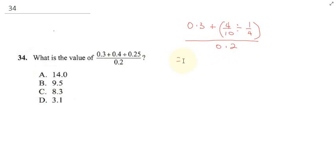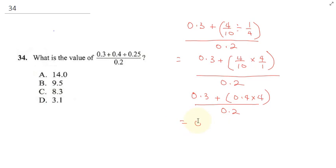In order to evaluate this, this would be 0.3 plus 4 over 10 times 4, which is 0.4 times 4, all divided by 0.2. This gives me 0.3 plus 0.4 times 4, which is 1.6, all divided by 0.2.